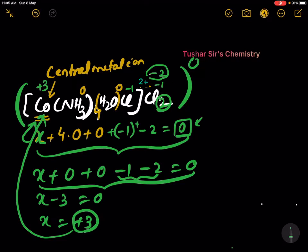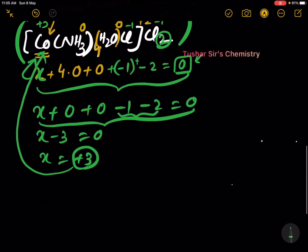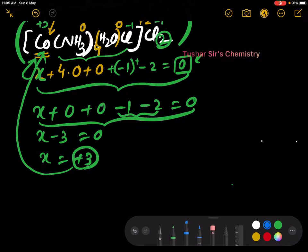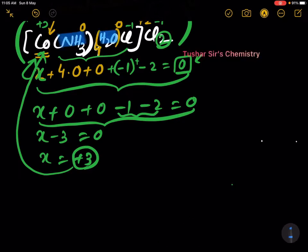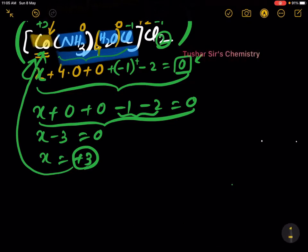Now we have to write the IUPAC name of this compound. To write the IUPAC name, we have to write the ligands alphabetically. The ligands are ammonia, water, and chlorine. These ligands should be written first, and cobalt, the central metal ion, should be written after the name of the ligands.